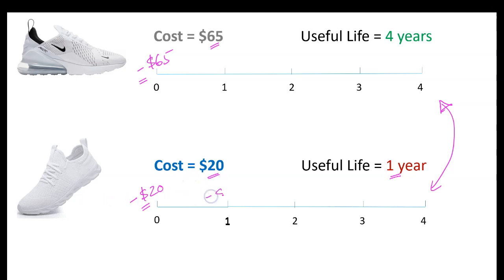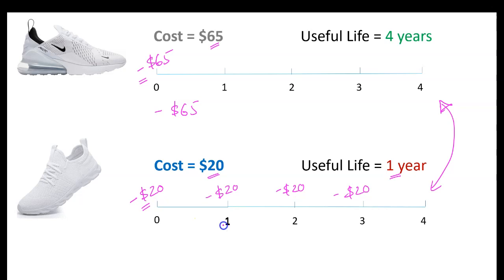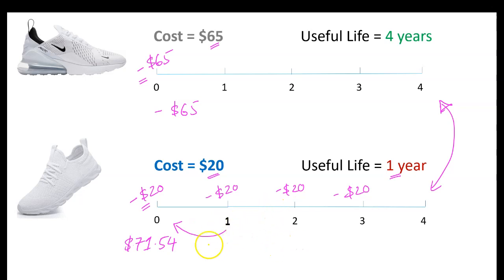With the generic brand, you're going to spend another $20 at the end of year one, another $20 at year two, and another $20 at year three. You should never add up dollar values occurring at different points in time — you should discount them. Technically, you need to discount each $20 back appropriately. Assuming a discount rate of 8%, when you discount those $20 payments back, the net present value comes out to $71.54.